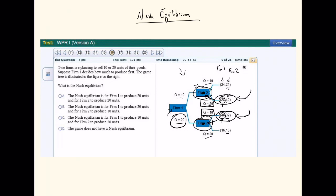So we can see the Nash equilibrium here. Firm one would choose to produce 20 and firm two would choose to produce 10. And this would lead to a payoff of 48 for firm one and 32 for firm two.